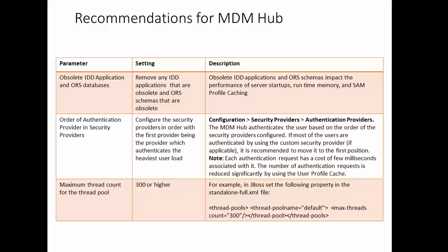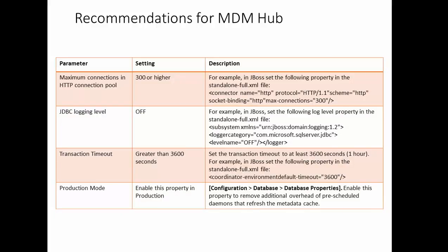Next is the maximum thread count for the thread pool. We should know the optimum value — Informatica recommends more than 300. If you are using the JBoss application server, there is a property called the thread pool with the property name 'thread pool name: default', and the maximum thread count value we can set is 300.